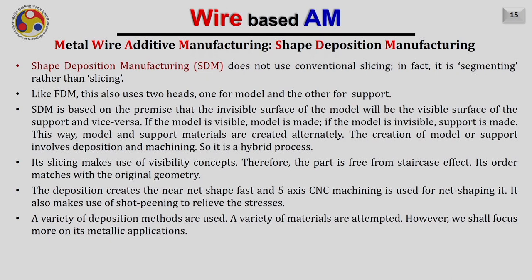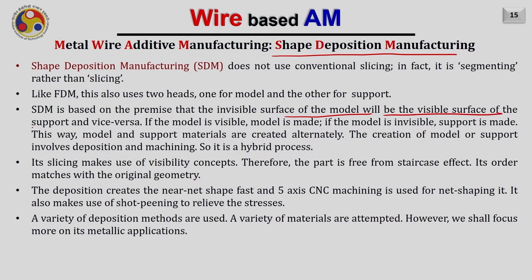Shape deposition manufacturing does not build the part like other additive manufacturing processes — it creates parts in segments, not in a layer-by-layer manner. Like FDM, this process uses two heads to deposit two different materials: one for support and one for the main material. SDM is based on the premise that the invisible surface of the model will be the visible surface of the support, and vice versa. This is a very important statement fundamental to understanding the process.